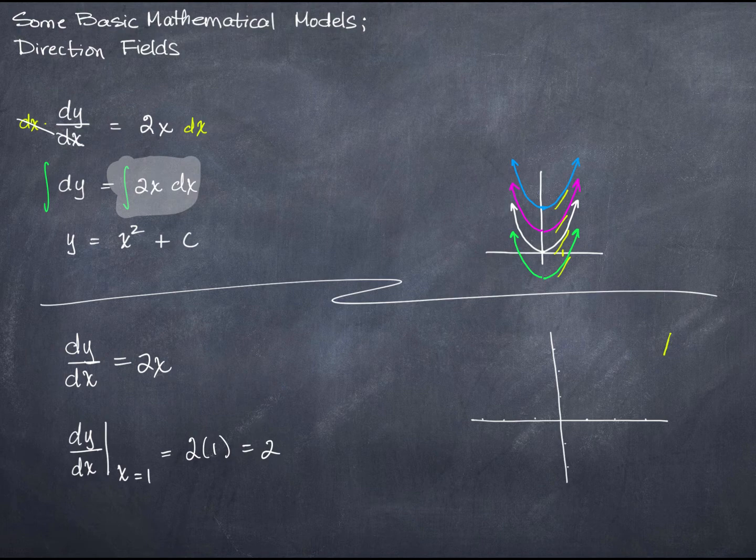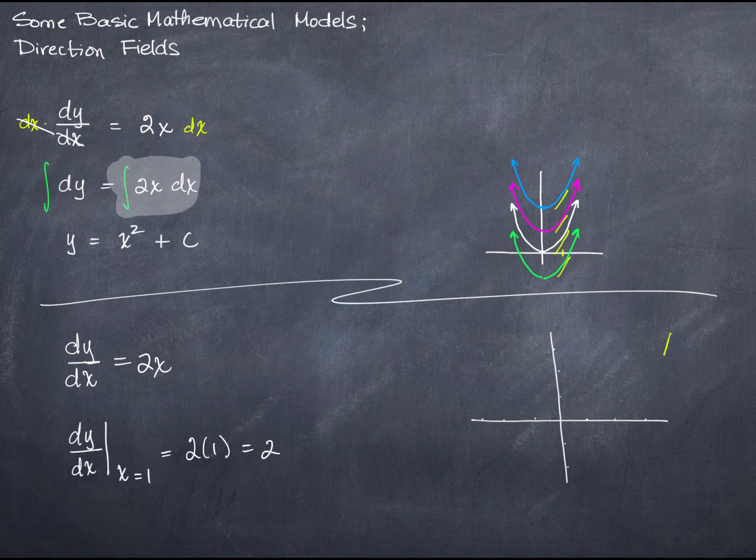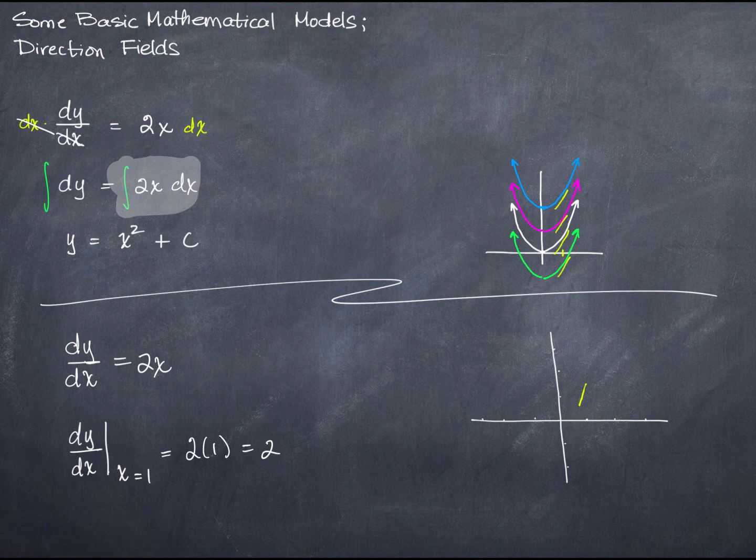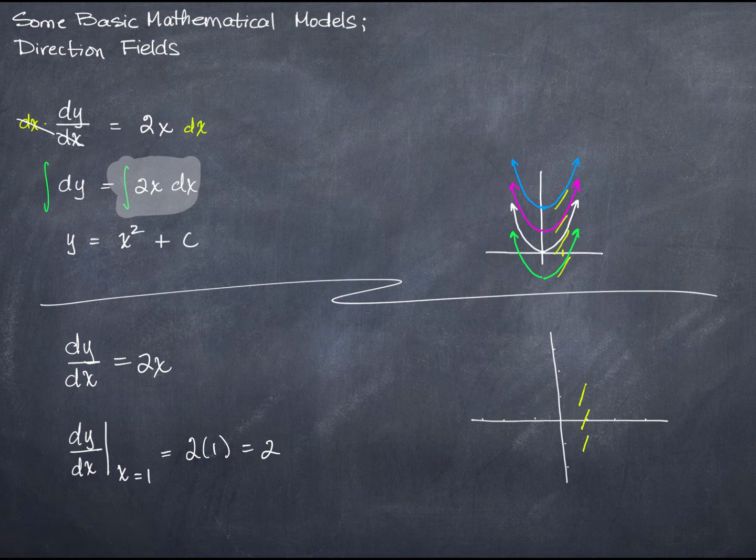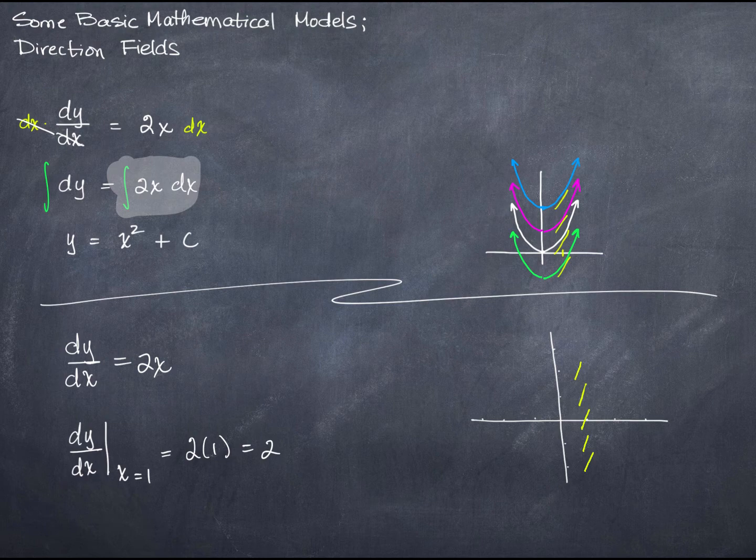Now, if I grab that and put it down here along the line x equals 1, and if I do that over and over again, I'll get something that kind of looks like this. These slopes, I'm not doing a super great job of making them really accurate, but you get the idea.